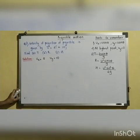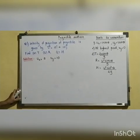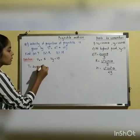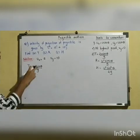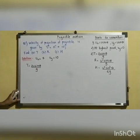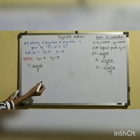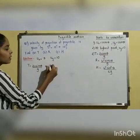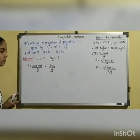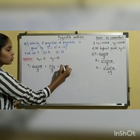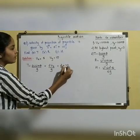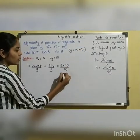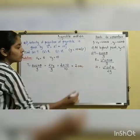Time of flight T = 2u sin theta / g. Since we know uy instead of the angle, we can write T = 2uy / g. Substituting uy = 10 and g = 10 m/s²: T = 2 × 10 / 10 = 2 seconds.